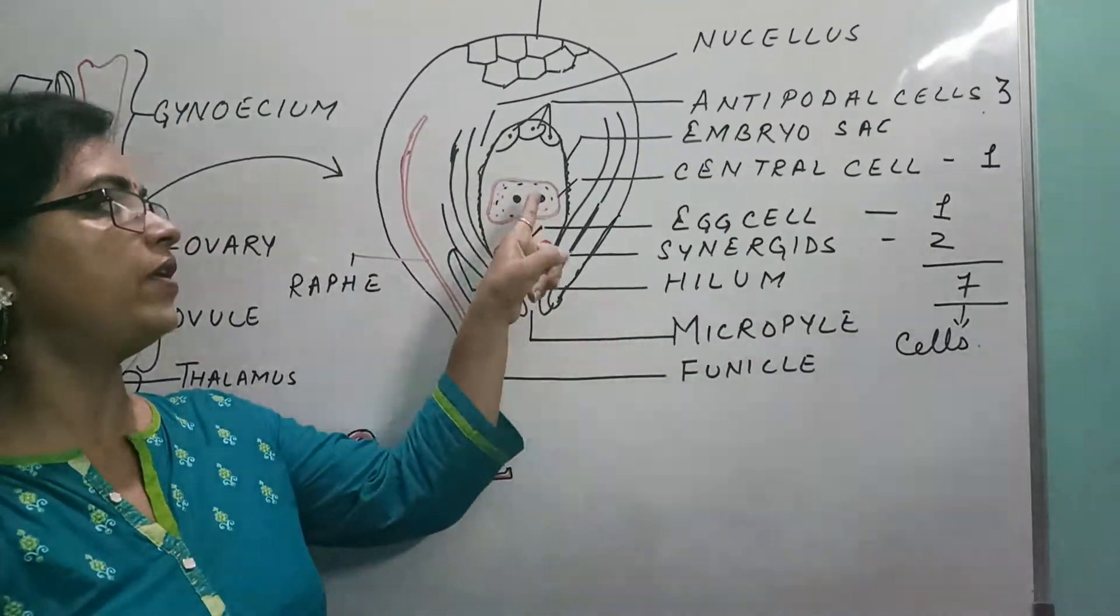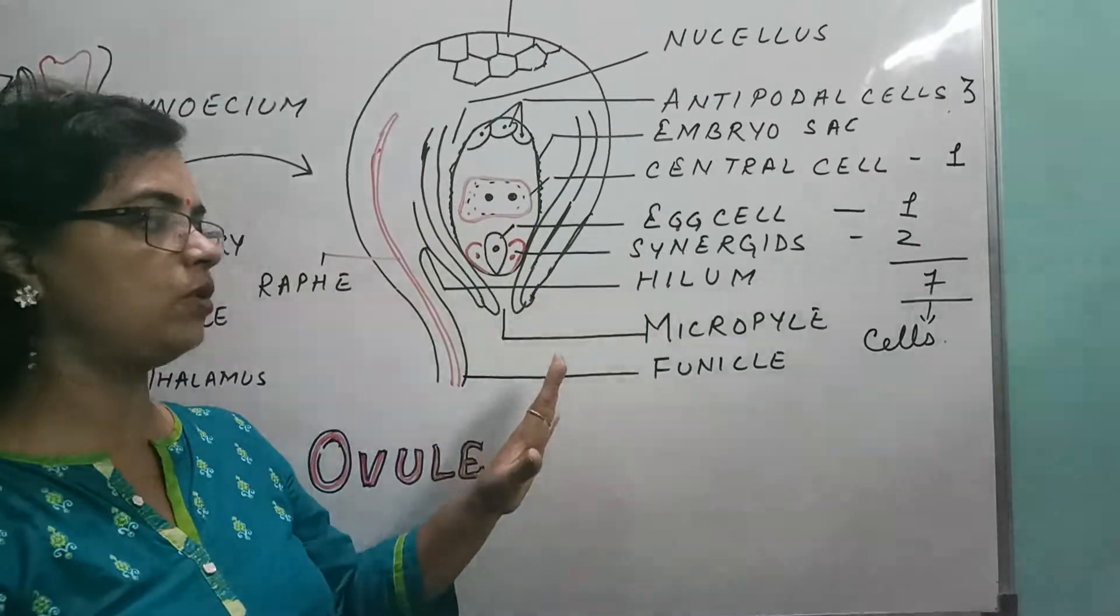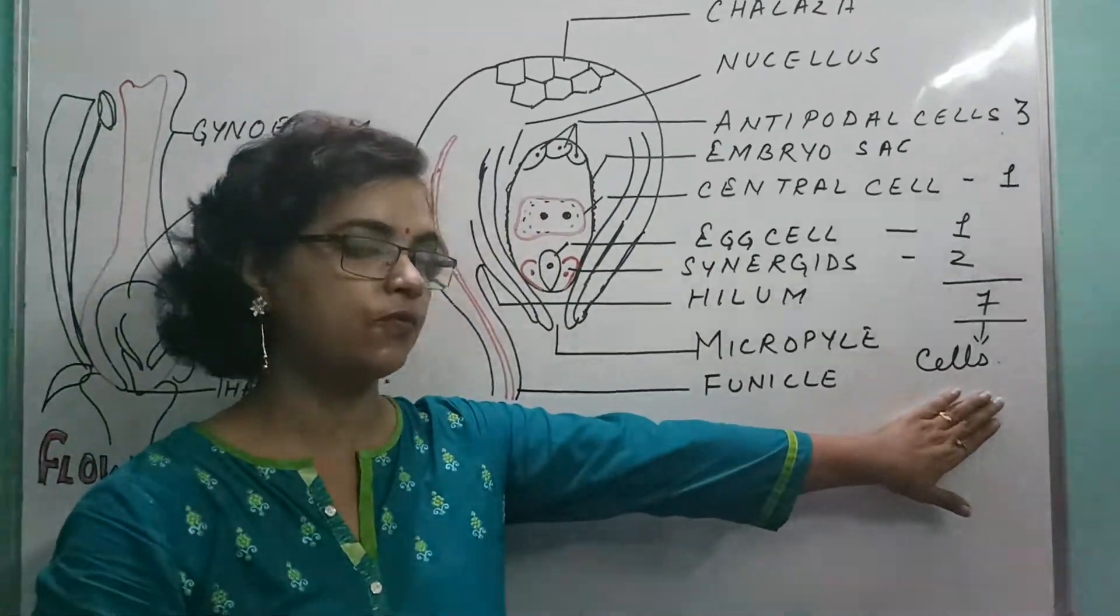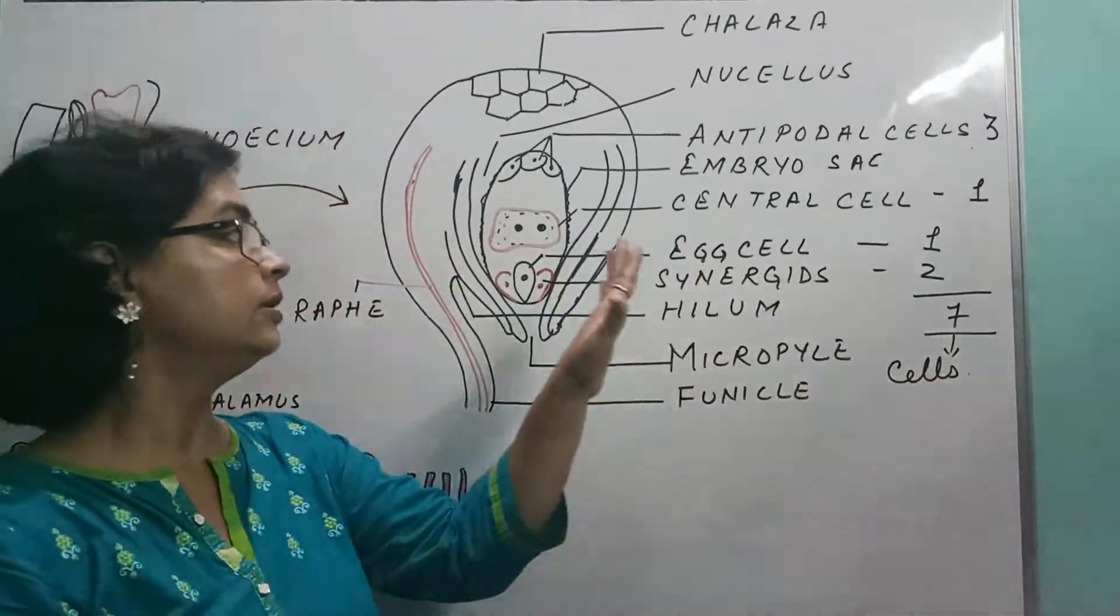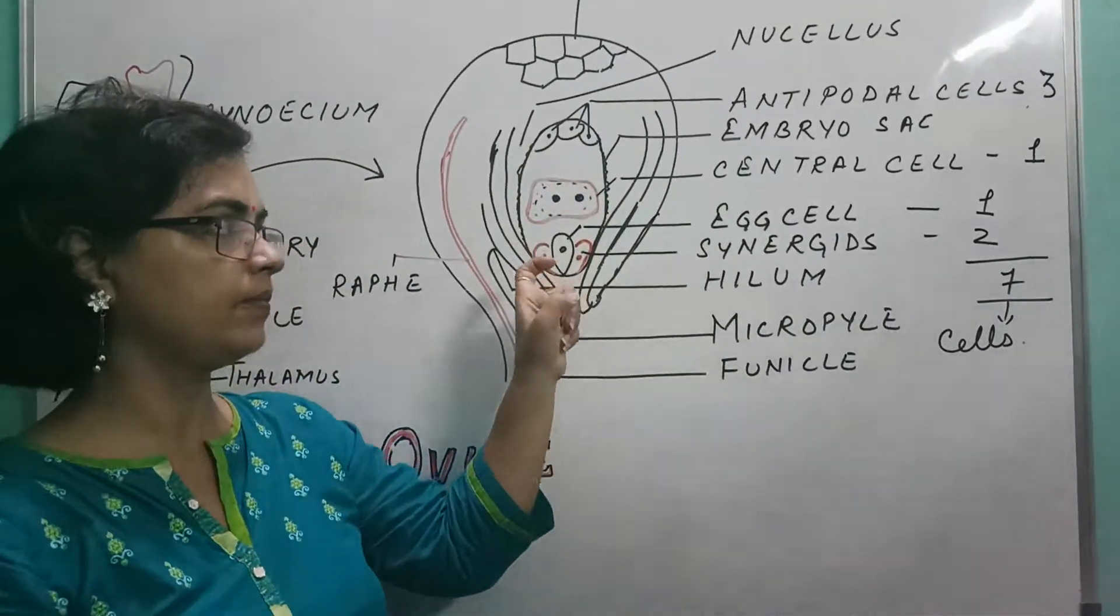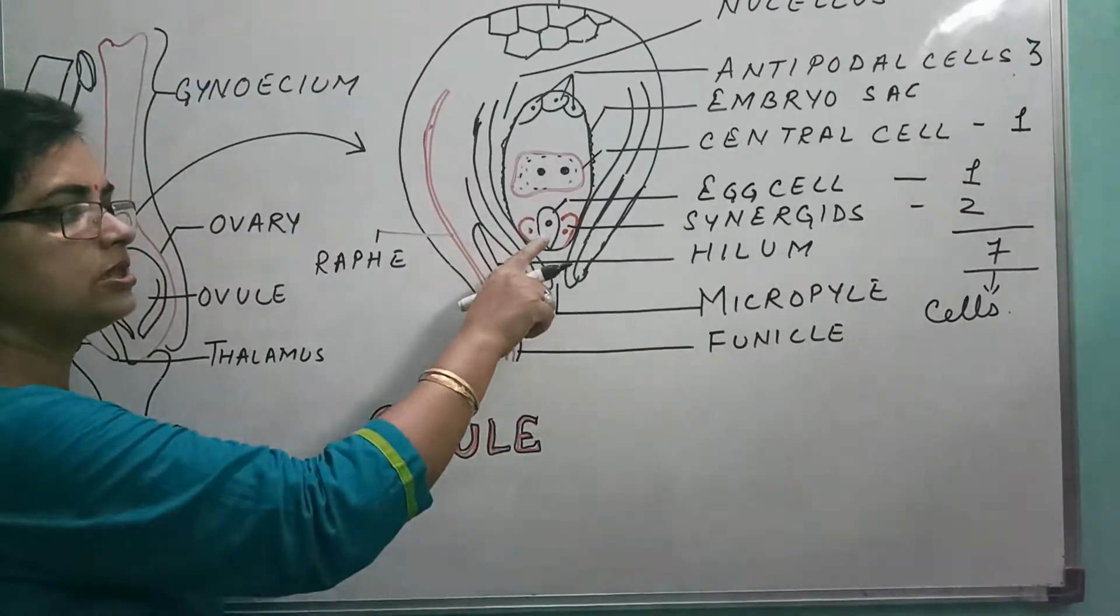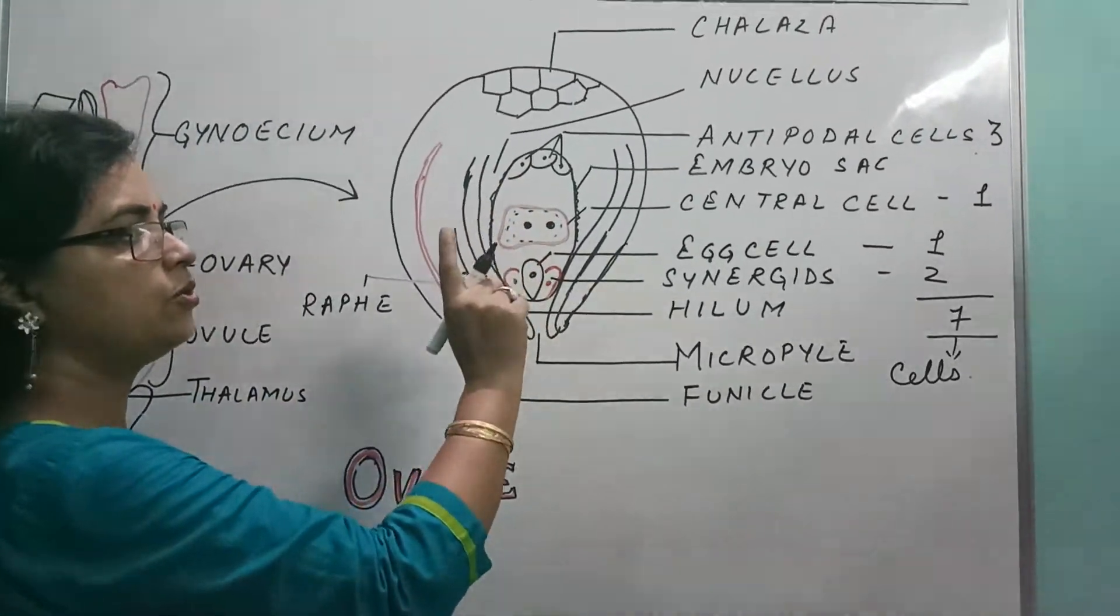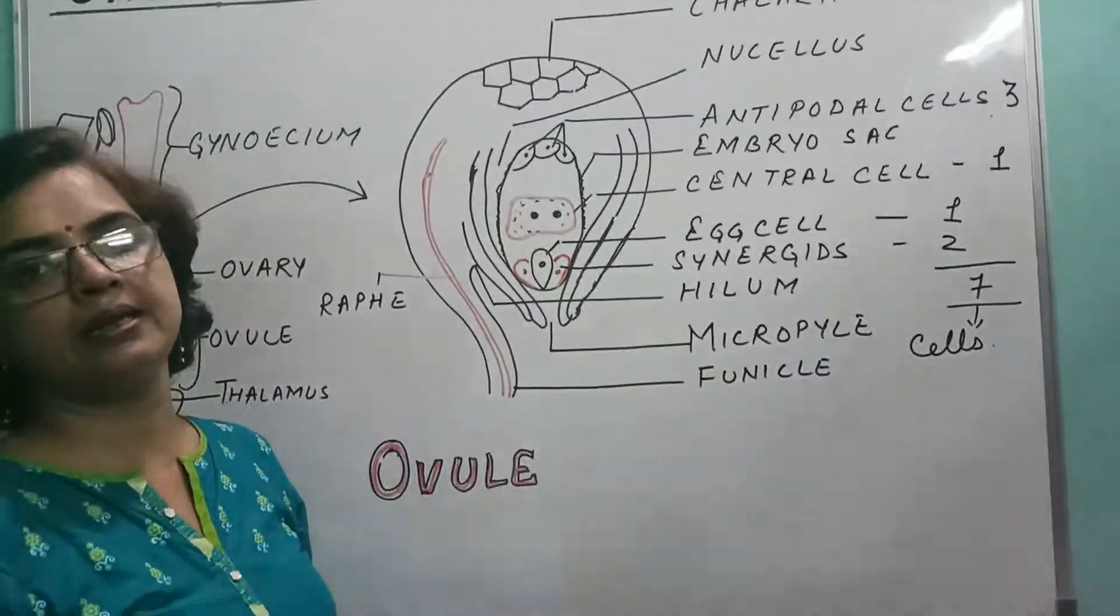There are 7 cells and 8 nuclei: 1, 2, 3, 4, 5, 6, 7, 8. 8 nuclei. So this question is of course of your different competitive examination. So this is, inside the embryo sac there are 7 cells and 8 nuclei. Next thing, all those cells which are present inside the embryo sac, they are haploid in nature.